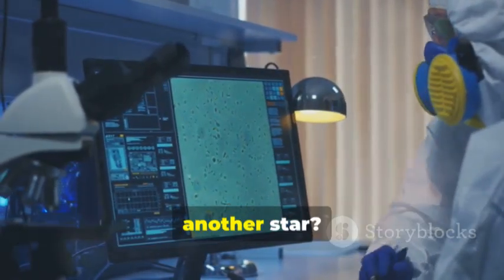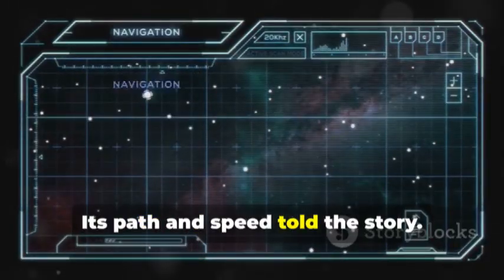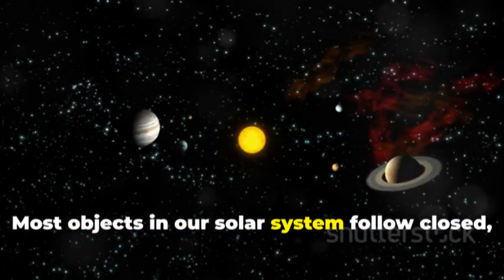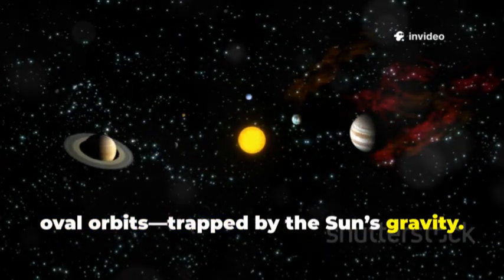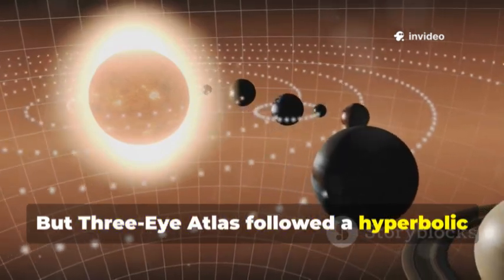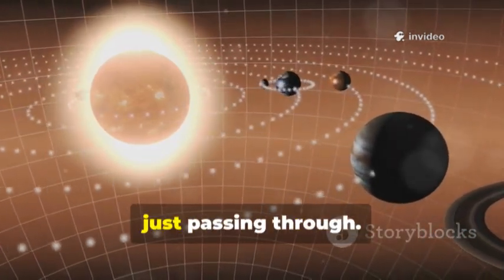How did we know 3I Atlas was from another star? Its path and speed told the story. Most objects in our solar system follow closed, oval orbits, trapped by the sun's gravity, but 3I Atlas followed a hyperbolic path, an open curve, just passing through.